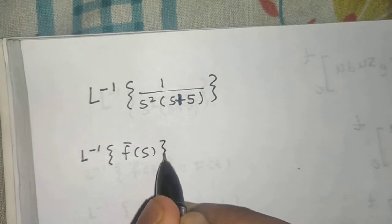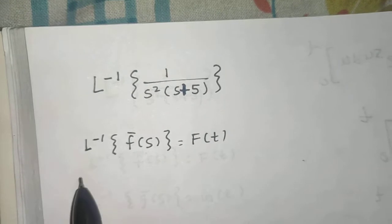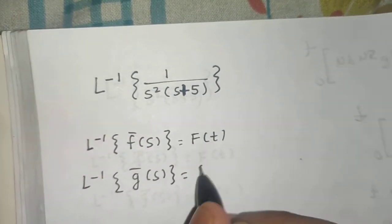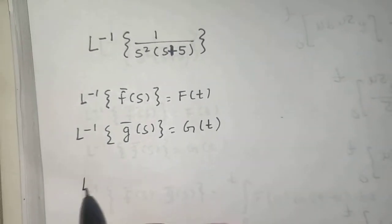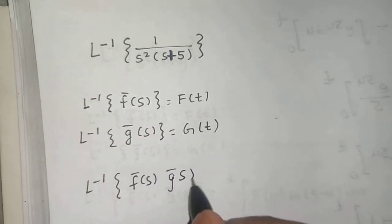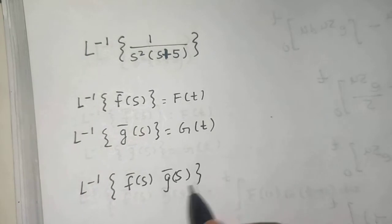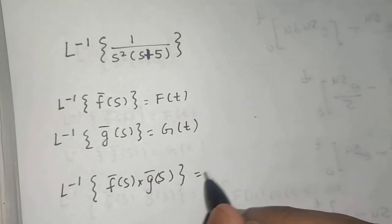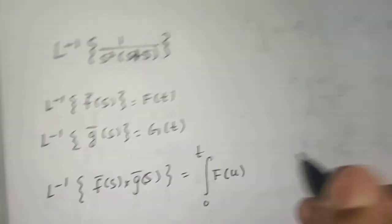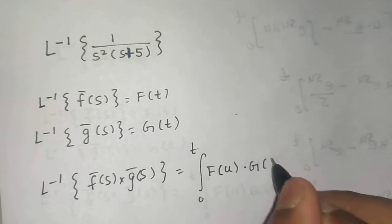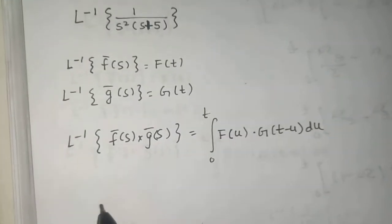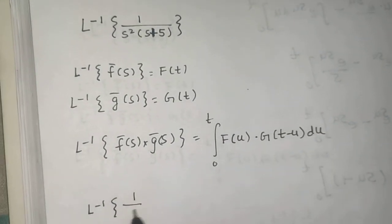The convolution theorem says that if the Laplace inverse of F-bar(s) is capital F(t), and the Laplace inverse of G-bar(s) is capital G(t), then the Laplace inverse of F-bar(s) times G-bar(s) is given by the integral from 0 to t — in the first function replace t by u, in the second replace t by t minus u, and integrate with respect to u.